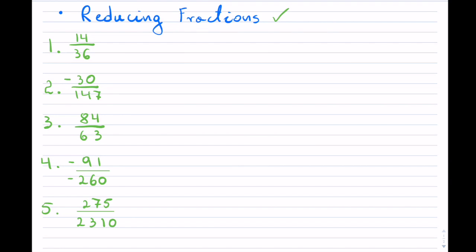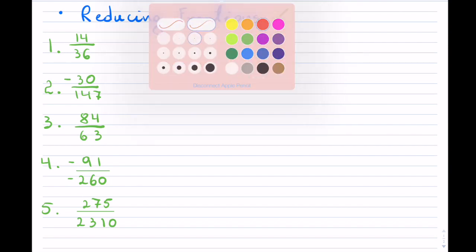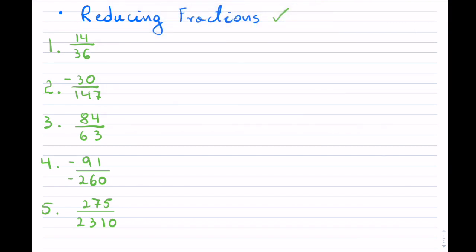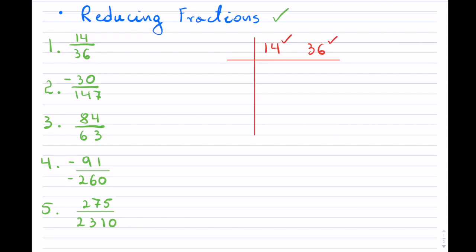Let us start with the first example which is 14 over 36. The way that I approach reduction of fractions is I basically will always take the smaller number — it doesn't matter if it's the numerator or denominator — and place it first, then we have 36. I'm going to draw myself a little table. We are reducing fractions to its lowest terms, so we want to see which prime will go into both numbers so that we can reduce by that prime.